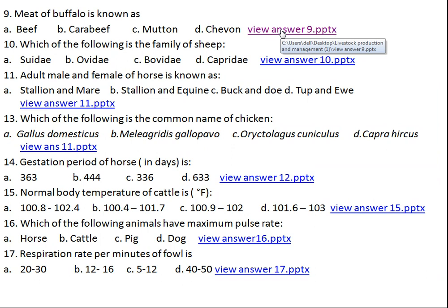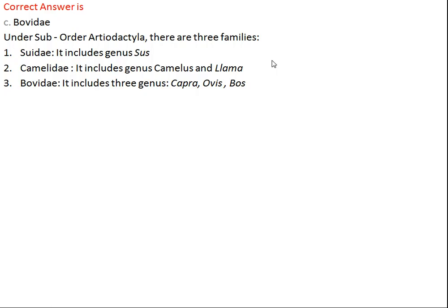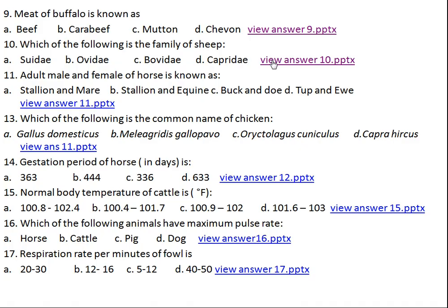Question number ten: which of the following is the family of sheep? Option A: Suidae, Option B: Bovidae, Option C: Bovidae, Option D: Caprinae. The right answer is Bovidae. There are two suborders: Perissodactyla and Artiodactyla. Even-footed animals come under suborder Artiodactyla. Under Artiodactyla there are three families: Suidae, Camelidae, and Bovidae. Under Suidae there is genus Sus which includes pigs. Camelidae includes genus Camelus and Lama. Under Bovidae there are three genera: Capra (goat), Ovis (sheep), and Bos (buffalo and cattle).